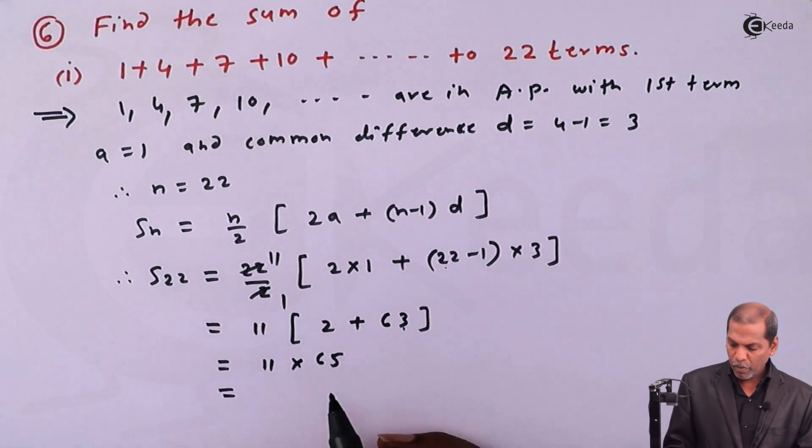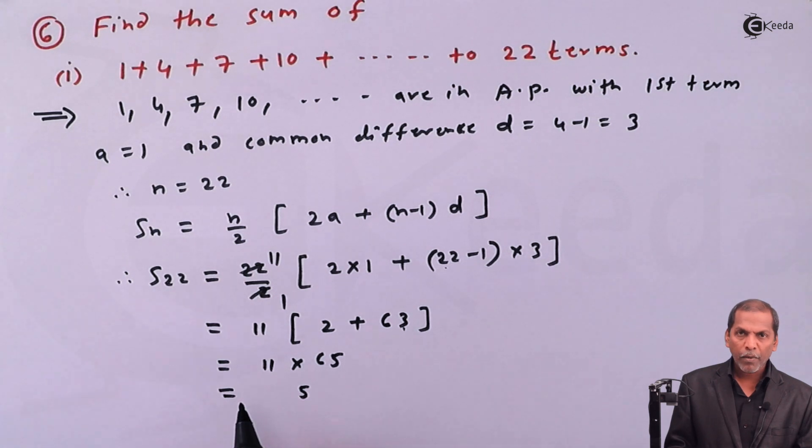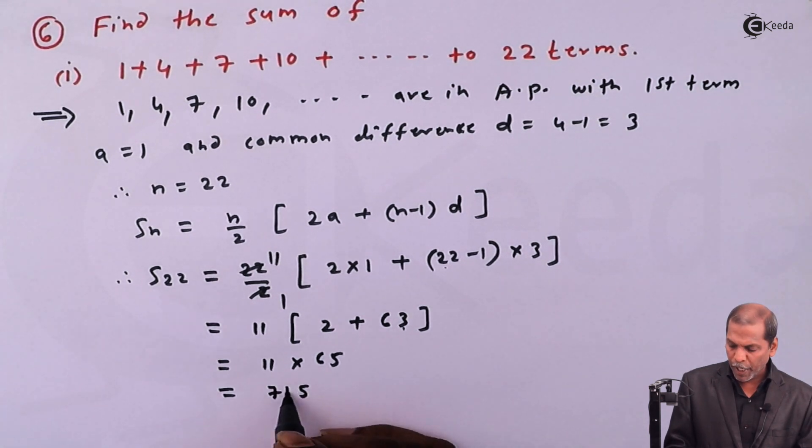We get 65 ones are 65, then again 65 ones are 65 plus carry 6, that gives 71, so we get 715.